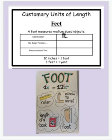You could also extend your arm — the length from your elbow to your wrist could be a foot. Also, your math journal: the length of your book could be about a foot, or an adult foot could be about a foot. The measurement tool we use for feet is a ruler.